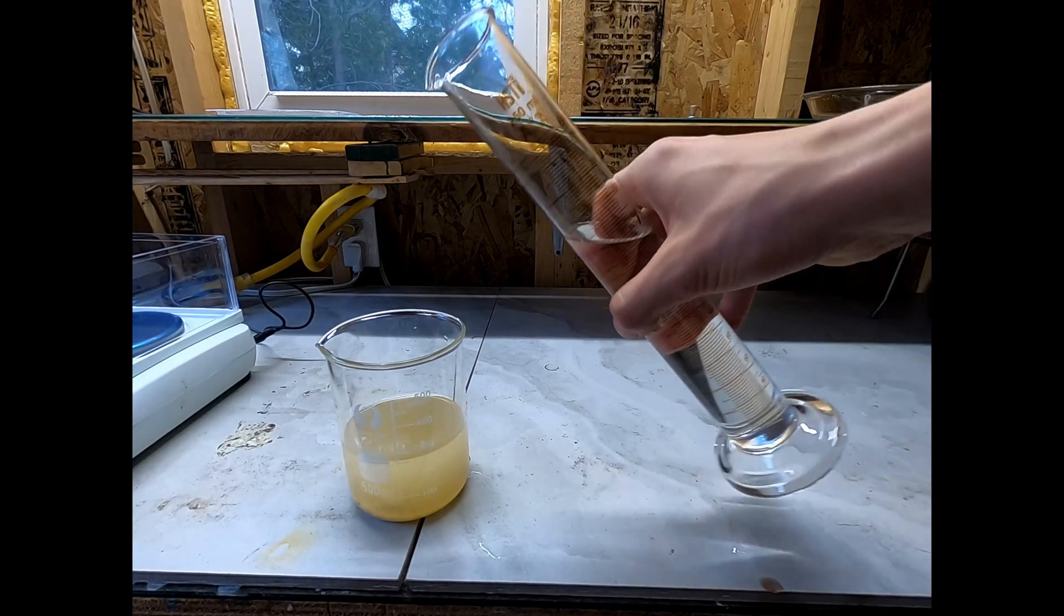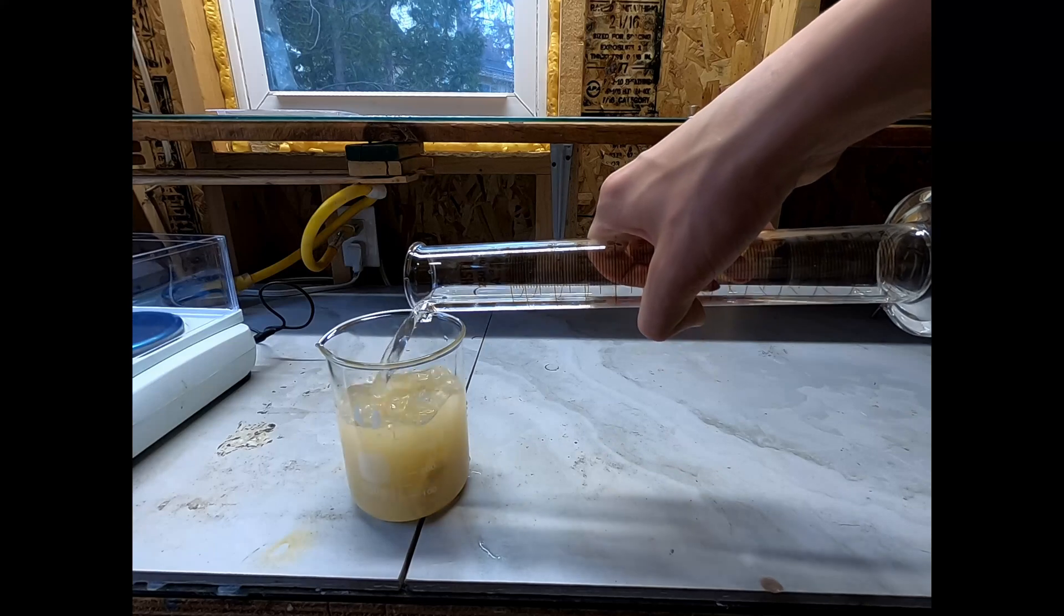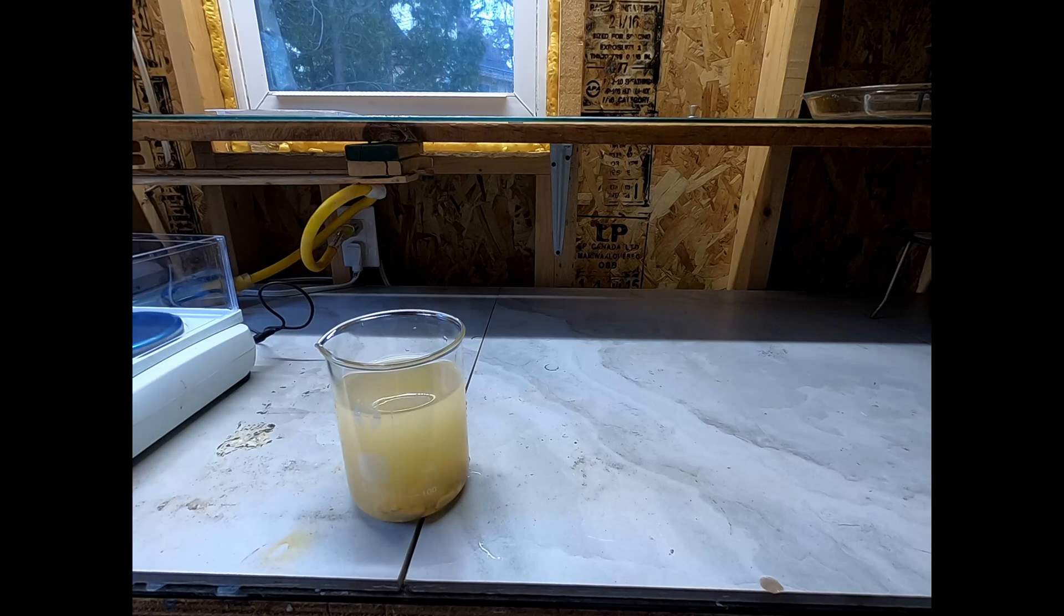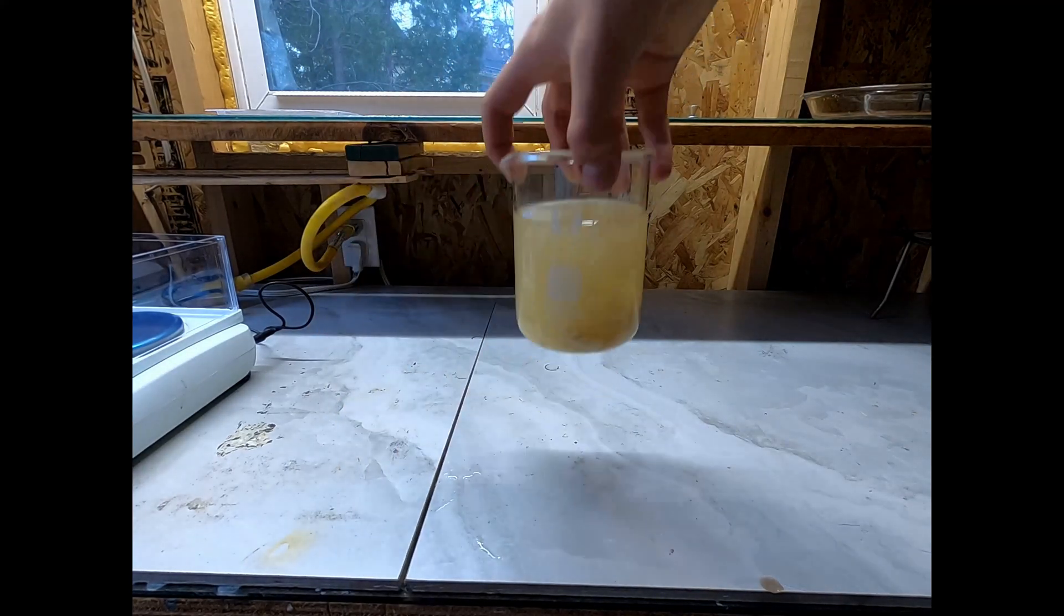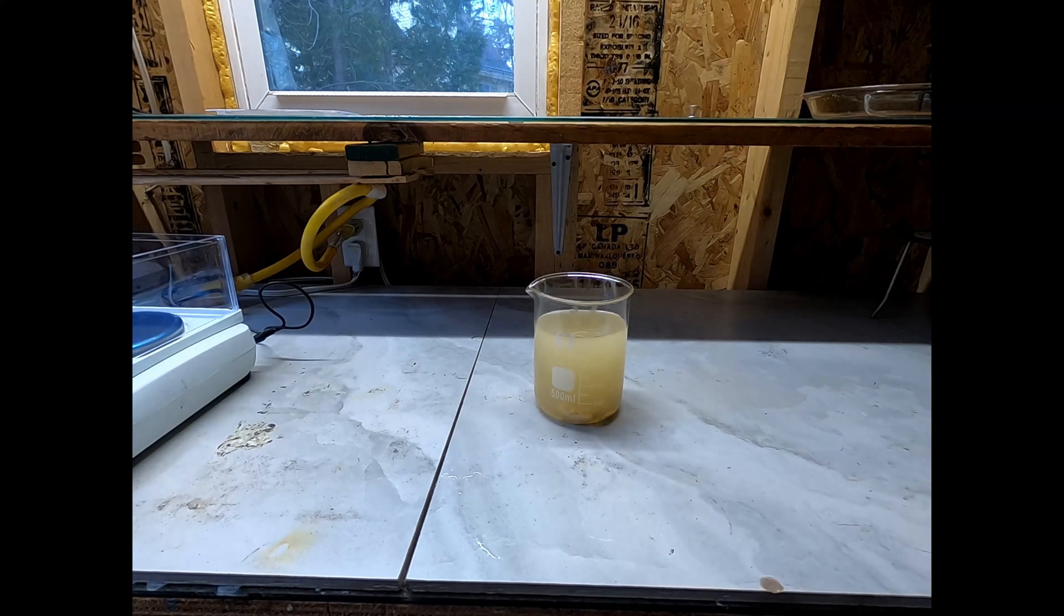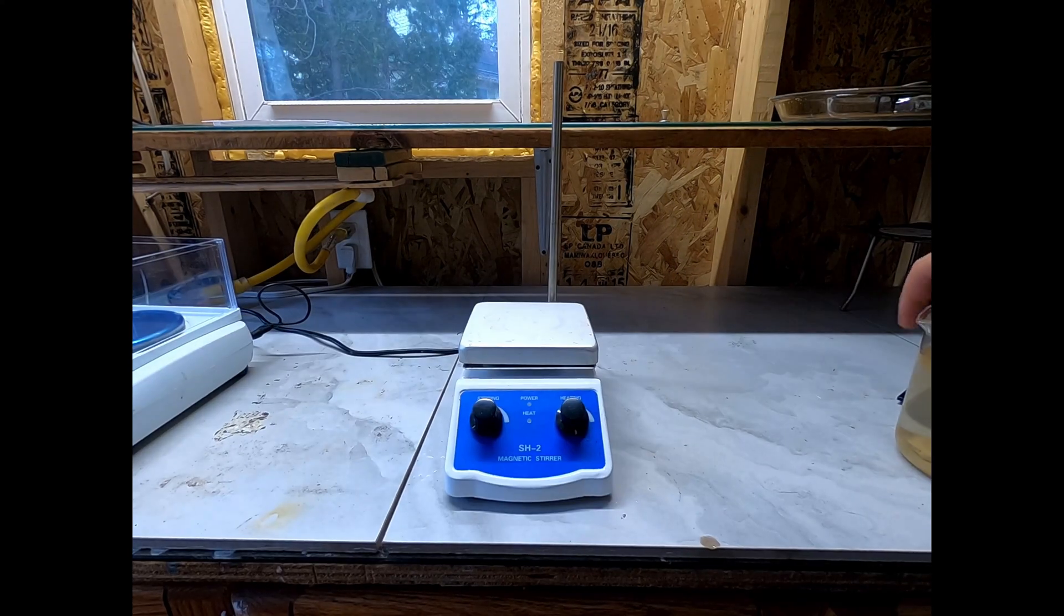As you can see, the sample is very contaminated with a bunch of brown insoluble stuff floating around. Later I'll do a vacuum filtration to separate this, but first I'm setting up a hot plate and stirring to start dissolving most of the solid chunks that should be sodium carbonate.